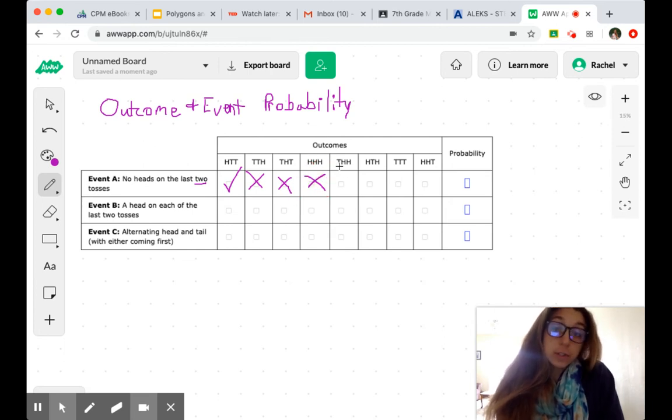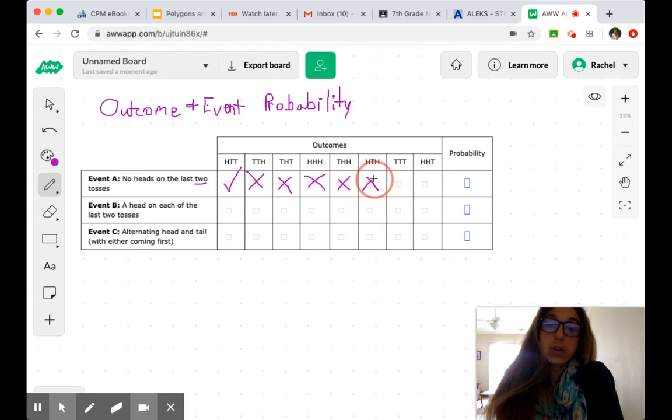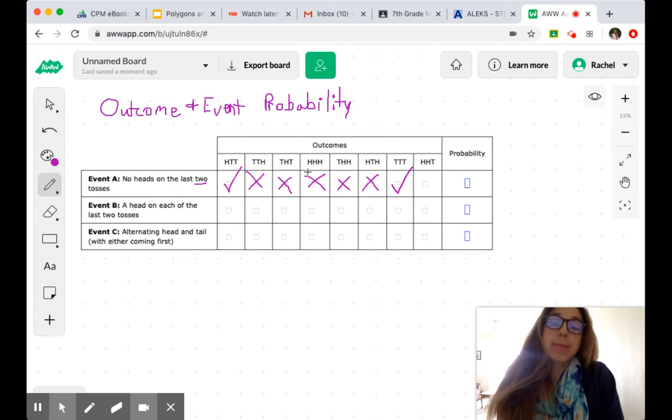This one started with tails and then went to heads. So that's a no. Heads, tails, heads again. That's a no. Oh, this time we flipped all tails. So we're good. Because we don't really care what's happening in the first flip for this event. We just are focusing on the last two tosses. And once again, we see an H there. So no good.